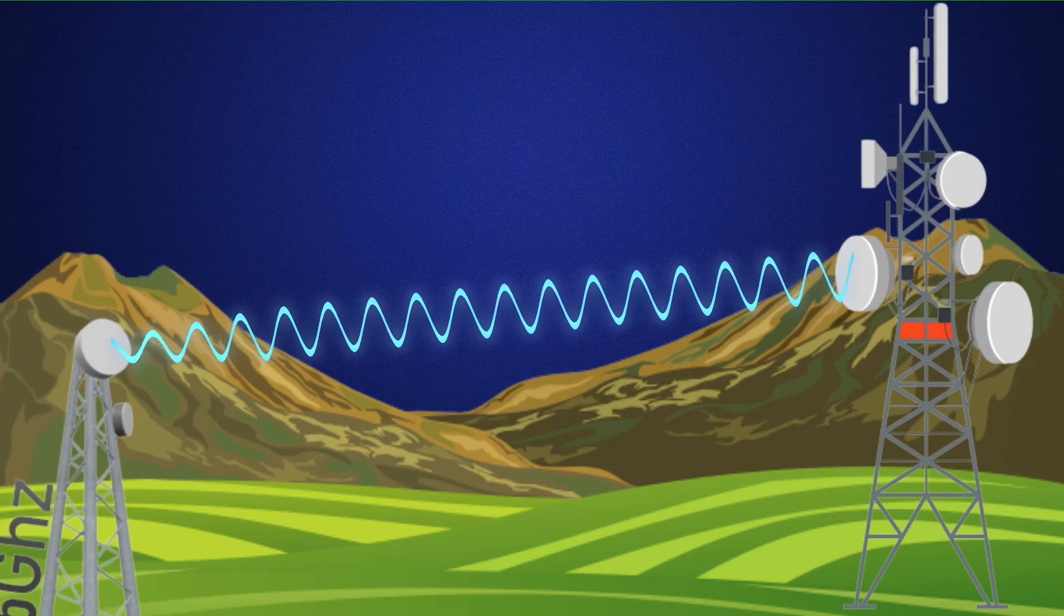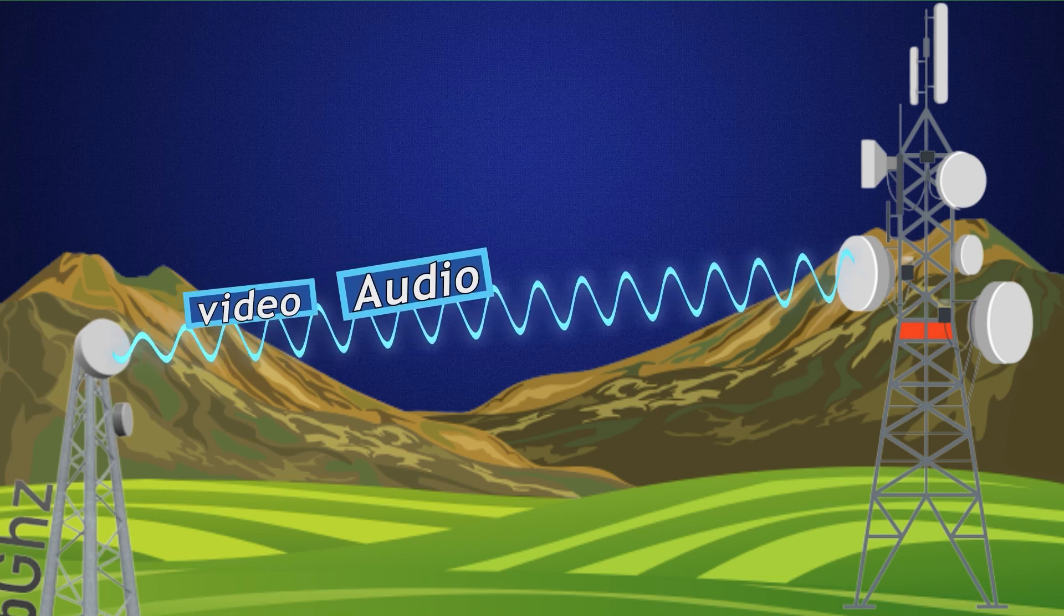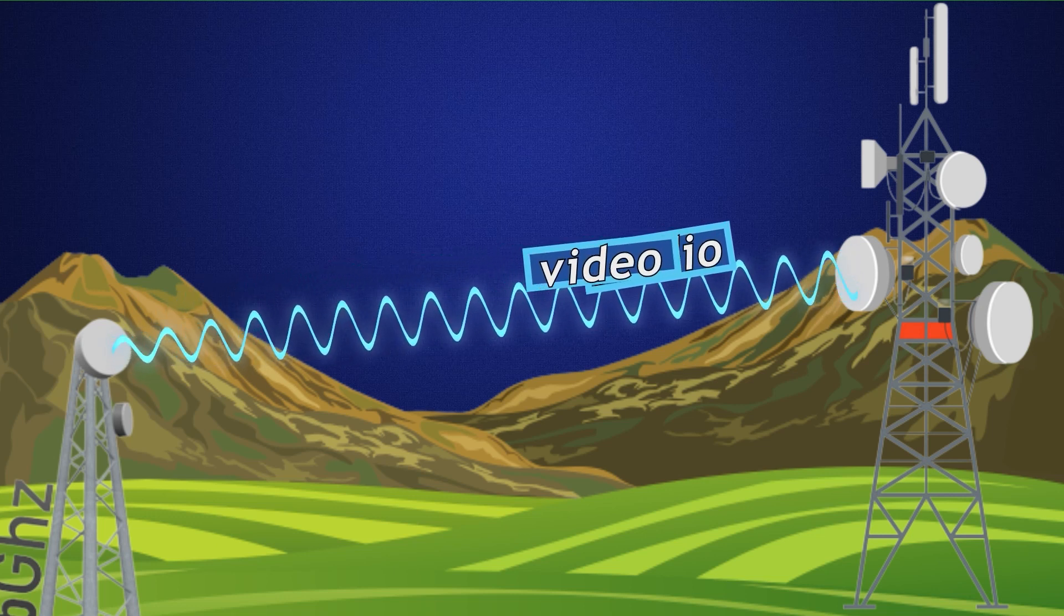Microwave antennas are used to transmit and receive high-frequency radio waves, which can be used to carry voice, video, and data signals over long distances.